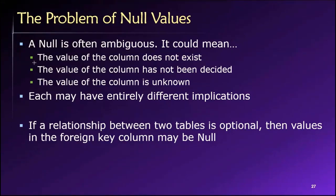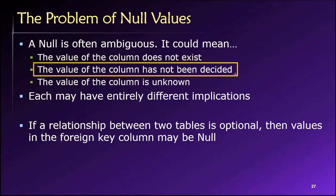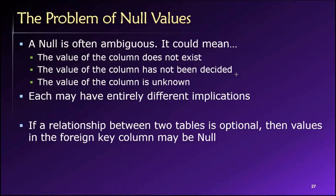Another possibility for null values is that the value hasn't been decided yet. For example, we just added a new employee to our employee database. Maybe in our company we hire people and put them through a training program before we decide the department in which they will work. So we record them in the employee table but leave the department ID empty, because it hasn't yet been decided — it will be decided after the training program results.